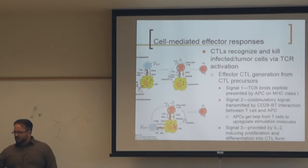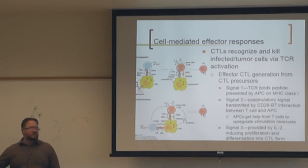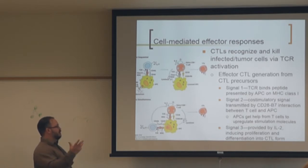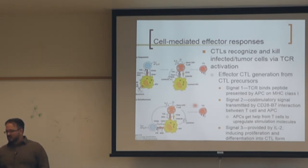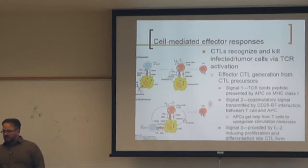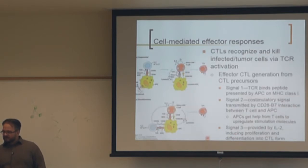On the same APC, MHC class II is expressed. When CD4 T cells bind to MHC class II, they direct that cell to process exogenous antigen and present it via MHC class I — this is cross-presentation. This allows the APC to now activate naive CD8s, which become mature cytotoxic T lymphocytes that go out seeking cells expressing the same MHC-antigen complex.